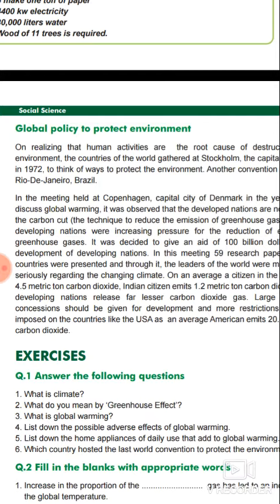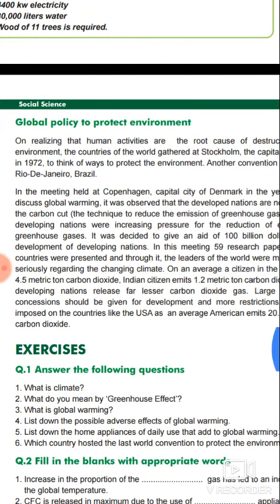This global policy to protect the environment includes solar energy, wind energy, tidal energy, biomass, and other non-conventional sources of energy. We have to use these as a key measure to prevent global warming and reduce the use of sources which release CO2.